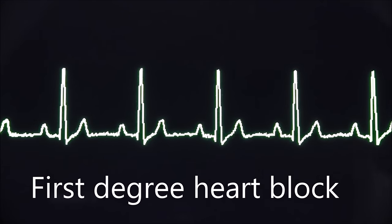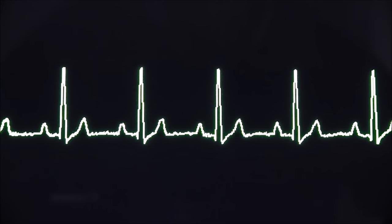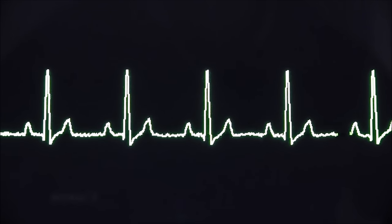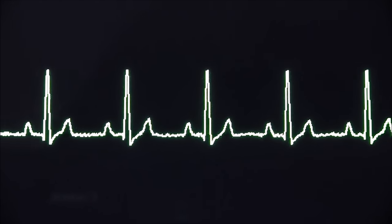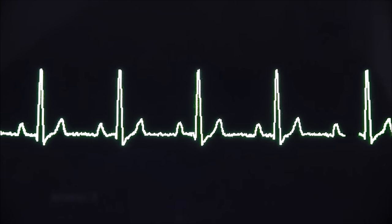Now at first glance this rhythm may appear normal as there's a PQRST in the right order, but can you see the gap between the P and the QRS is prolonged? If that gap is more than five small squares, which is 0.2 seconds, we will call that a first degree heart block.